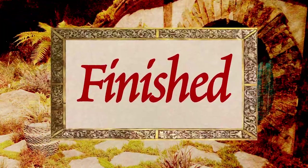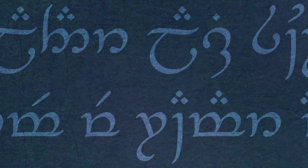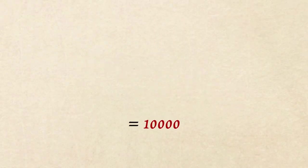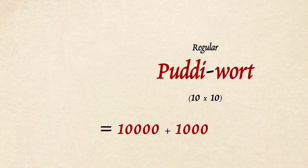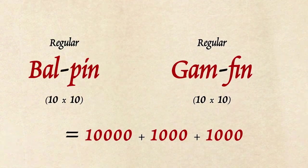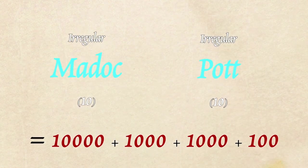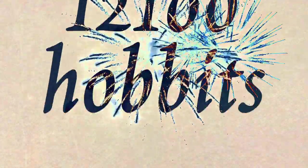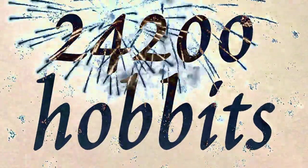The generator was finally finished, but how many unique hobbit names could it make exactly? It can make 10,000 regular hobbits with regular names, 1,000 hobbits with an irregular first name and a regular last name, 1,000 more with a regular first name and an irregular last name, and 100 hobbits with irregular first and last names — making a total of 12,100, or 24,200 male and female hobbit names.